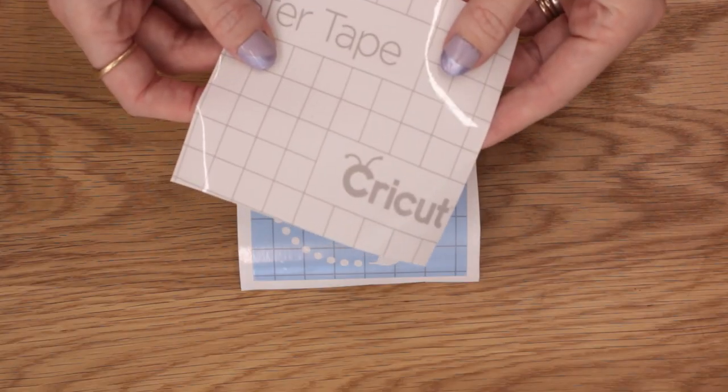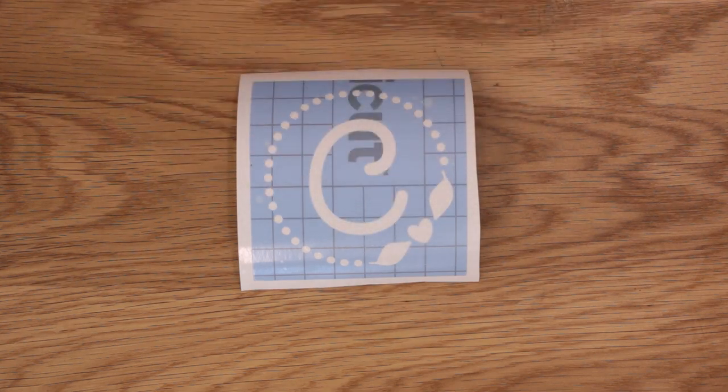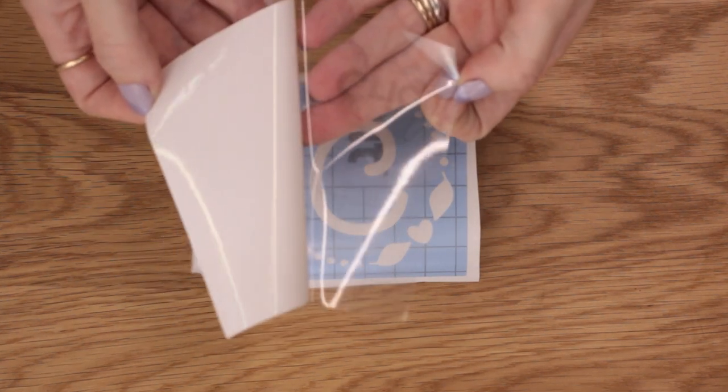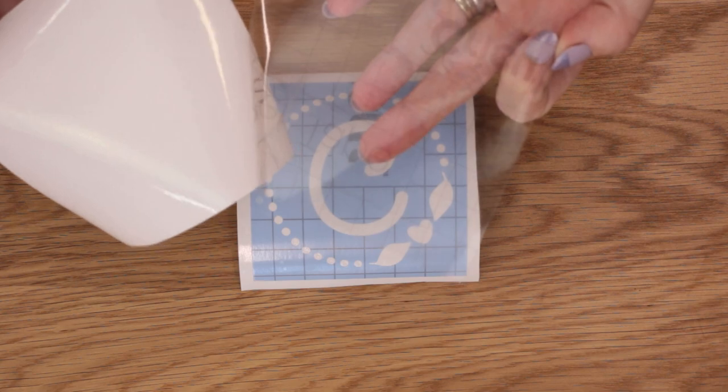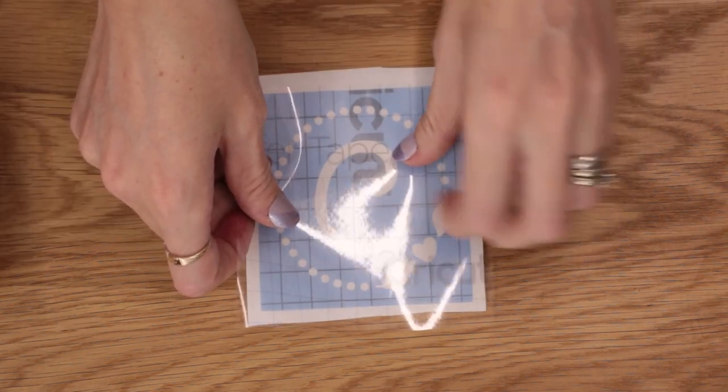So I'm just using Cricut transfer tape today. Peel it from its backing and of course this is completely reusable. Place it on top of our design.